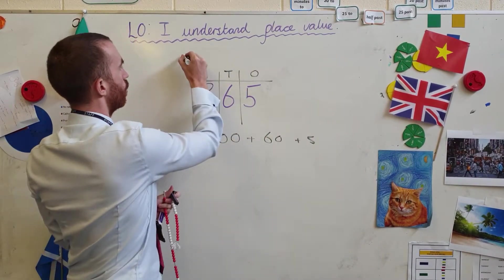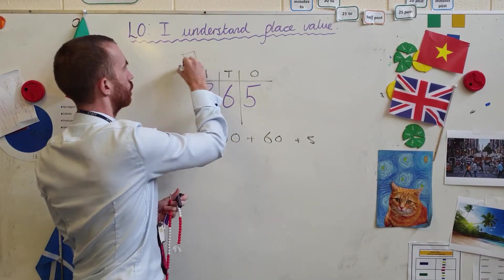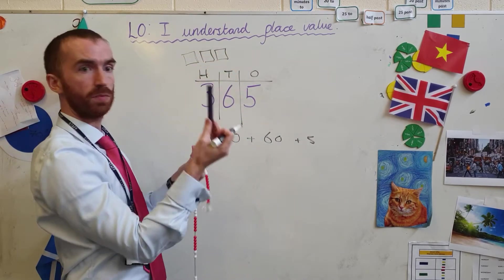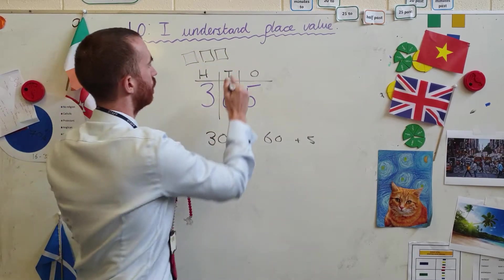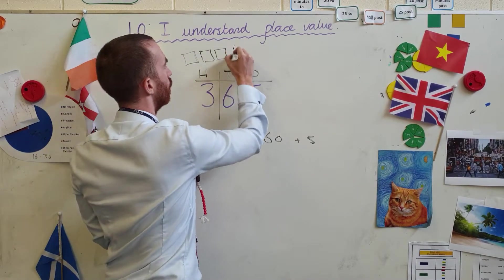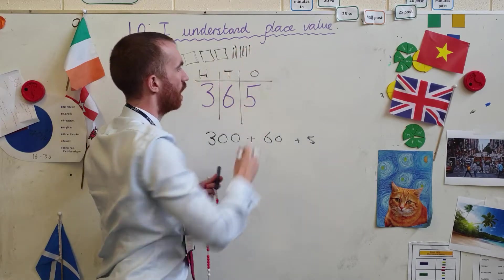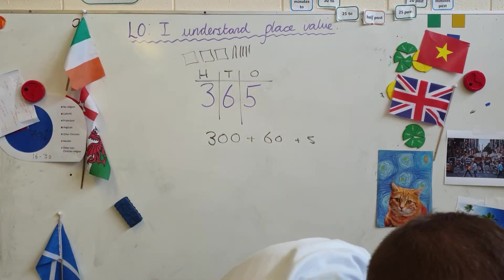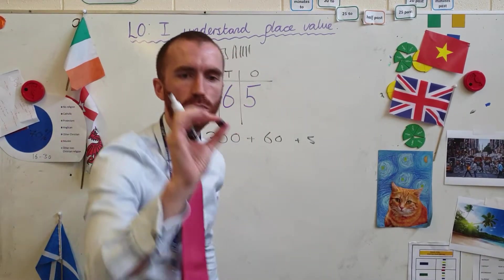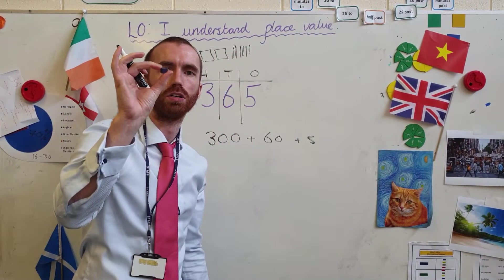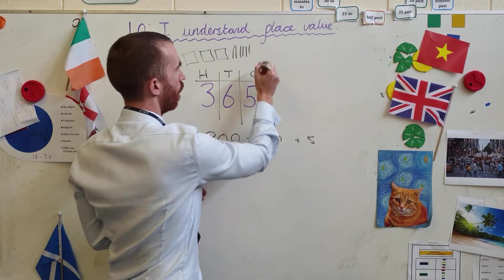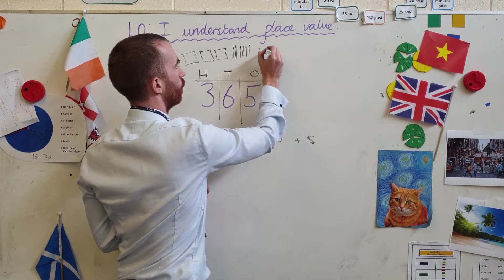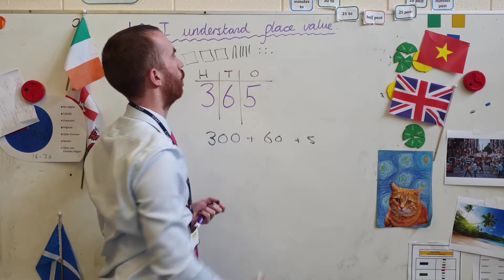Sometimes we use these to represent them. So look, I've got 300s. I've got 6 tens: 1, 2, 3, 4, 5, 6. And how many ones have I got? Well, we often use these little things to represent ones. I've got 1, 2, 3, 4, 5 ones.